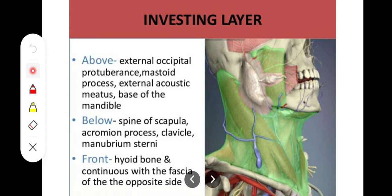Let's talk about the attachments of the investing layer. For the superior attachments, moving posteriorly, we have the external occipital protuberance, the superior nuchal line, then the mastoid process, the external acoustic meatus, and then the base of the mandible. So all of these are the superior attachments of the investing layer of the deep cervical fascia.